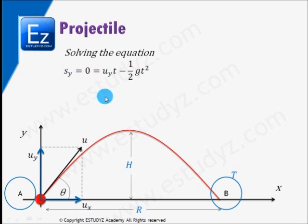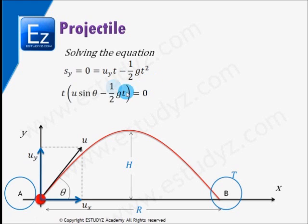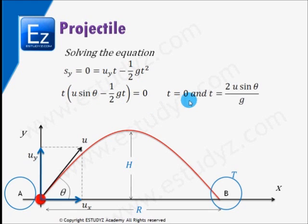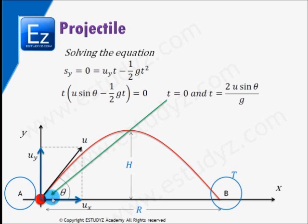Let us solve the equation Sy = 0, which is equal to uy·t minus half g·t squared. Taking t common gives a quadratic with two solutions: t equals 0, and t equals 2u sin theta over g. t equals 0 corresponds to point A, the start of the flight, and t equals 2u sin theta over g corresponds to point B. At both these points, the displacement along the y-axis is 0.